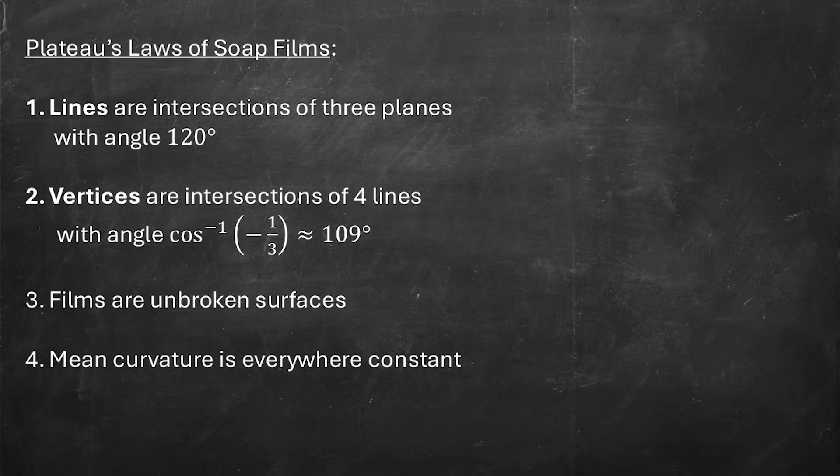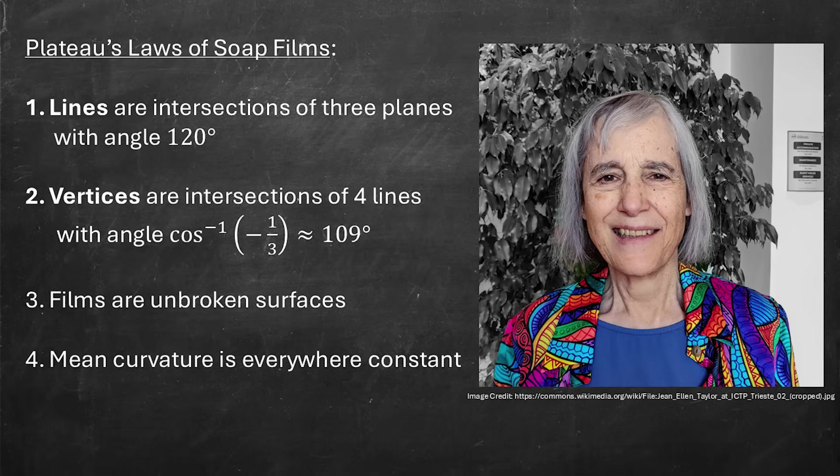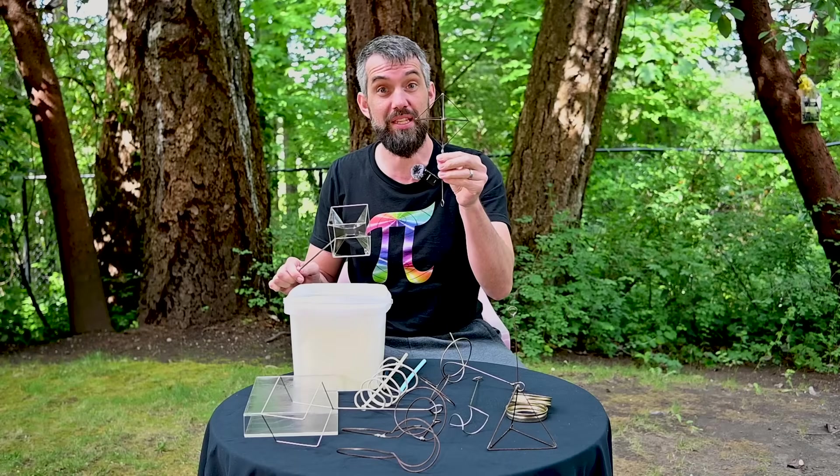These laws of bubbles — like that vertices are the intersections of four lines — were conjectured by Joseph Plateau, a physicist in the 19th century. But the mathematical proof that they will always happen for all bubbles was proven by Jean Taylor in the 1970s using something called geometric measure theory. I'm going to go from a cube to an octahedron.